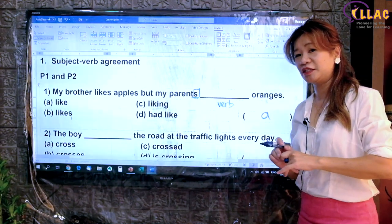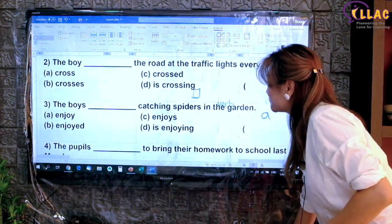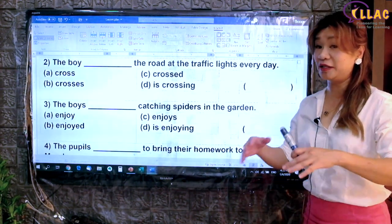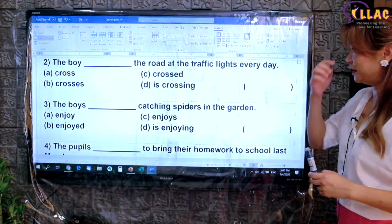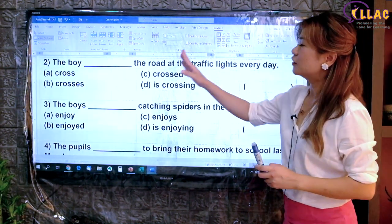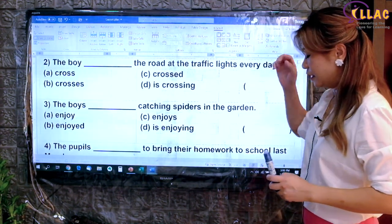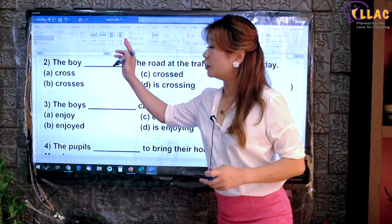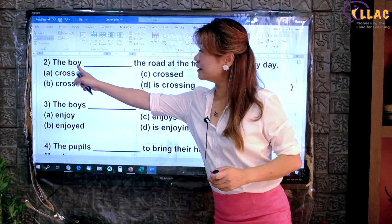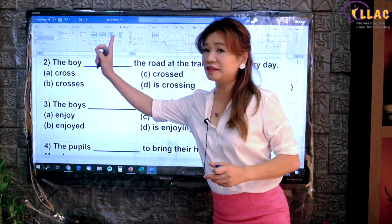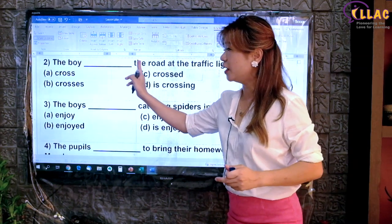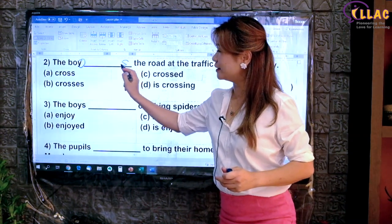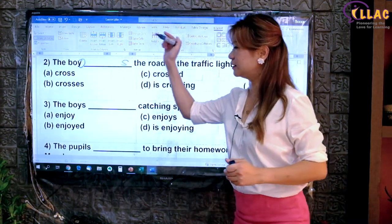Let's do a few more questions and you will know what I mean. For question 2 and 3, you might want to pause the video so that you can try it on your own. The boy crosses the road at the traffic lights every day. So the verb is 'cross'. To know who crosses, the 'who' will be the subject. In this case, one boy — singular subject — you will need a singular verb. A singular subject has no S, so the verb should have an S. Therefore, it is 'crosses'. Answer B.